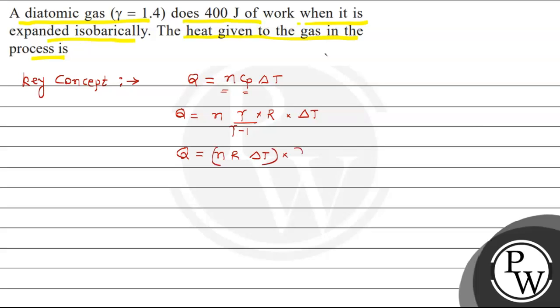And then into gamma upon gamma minus 1, and this one equals to work done. So work done into gamma upon gamma minus 1. Let's now see the solution.